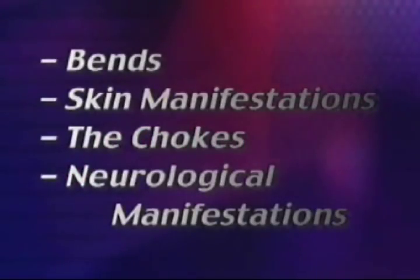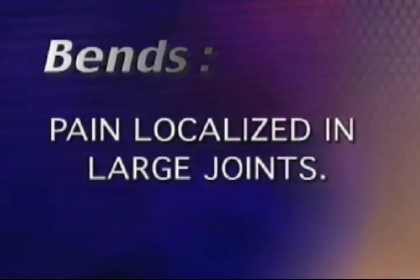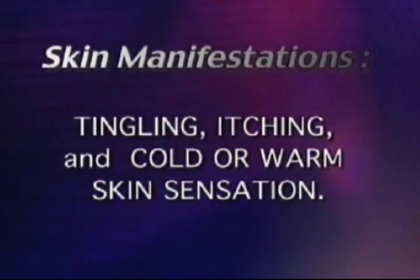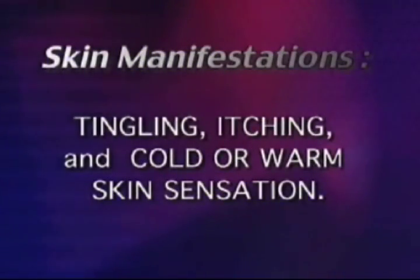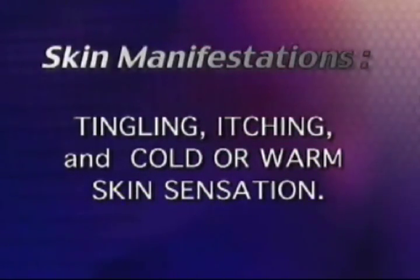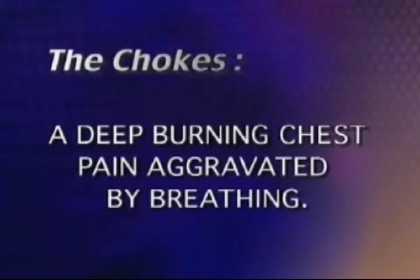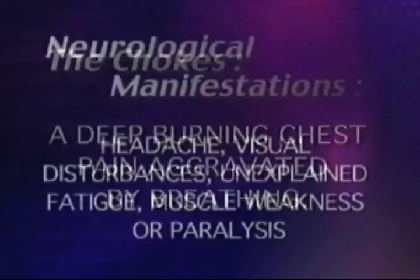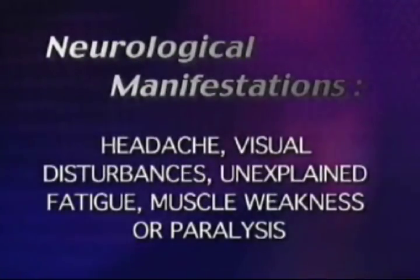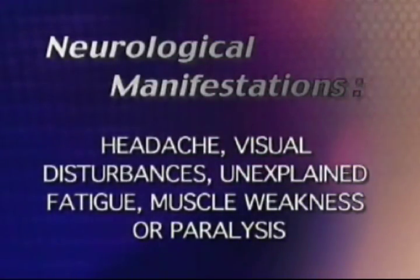There are four types of DCS: the bends — pain localized in large joints; skin manifestations — tingling, itching, and cold or warm skin sensation; the chokes — a deep burning chest pain aggravated by breathing; and neurological manifestations — headache, visual disturbances, unexplained fatigue, muscle weakness, or paralysis.